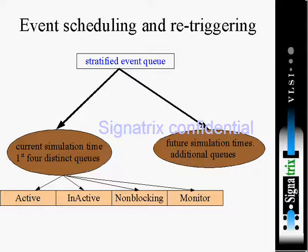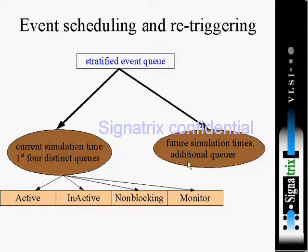That is the difference between event-based and cycle-based simulators. Coming to the event-based simulator, you can see two oval-shaped boxes: one is the current simulation time active event queue, and the other is the future simulation time additional queue. Each queue represents one time unit.